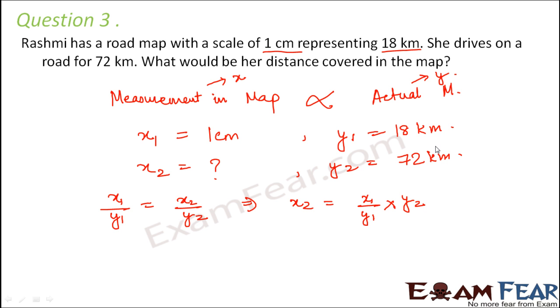Basically, it is ratio of y2 by y1. Since y2 and y1 both are in the same units, kilometers would get cancelled out. And x1 is in centimeters. So you will get x2 also in centimeters. So x1 is 1 centimeter. If you want, you can convert it into kilometers. So 1 centimeter is 1 by 10 to the power 5 kilometers. This is 1 by 10 to the power 5 into 1 by 18 into 72. So 18 into 4 is 72. So 4 by 10 to the power 5 kilometer, which is equal to 4 centimeters. So this would be the distance covered on the map.